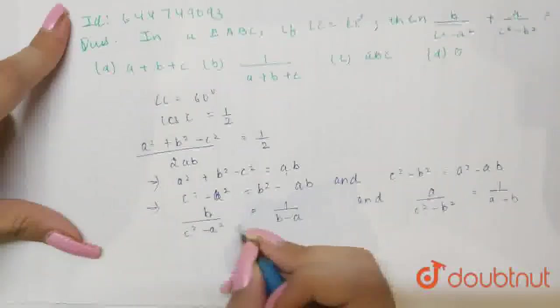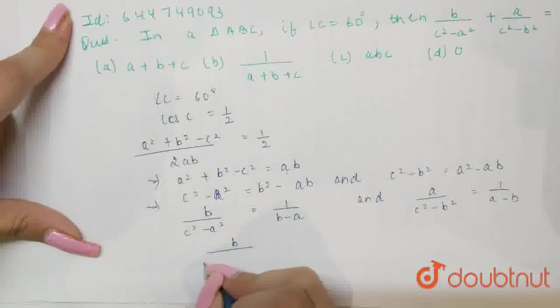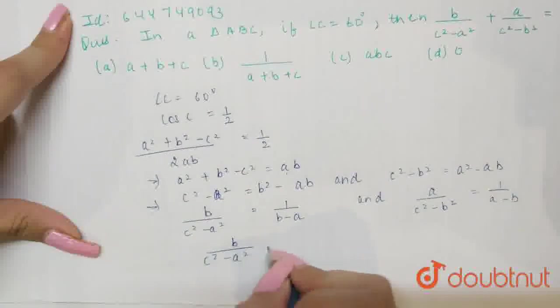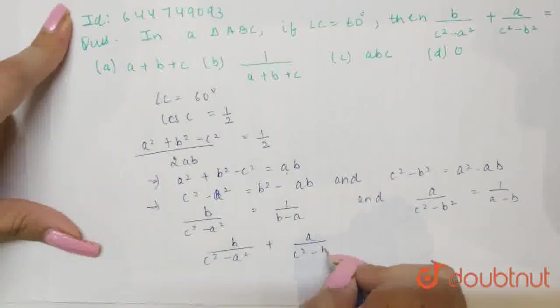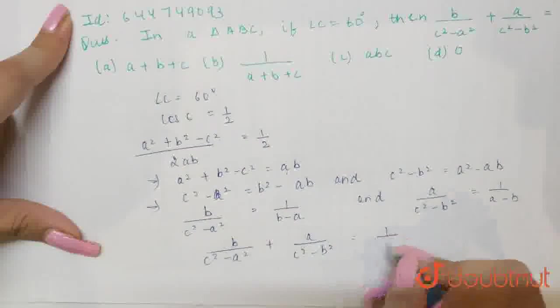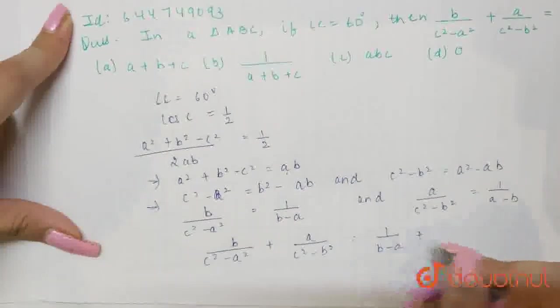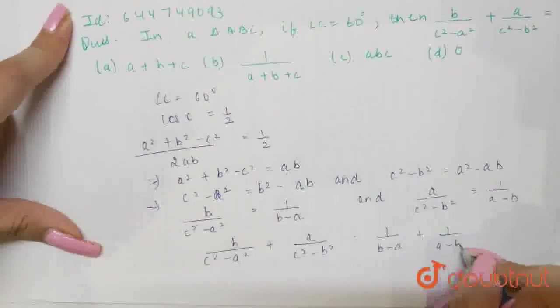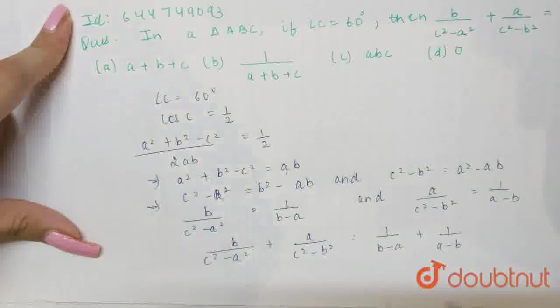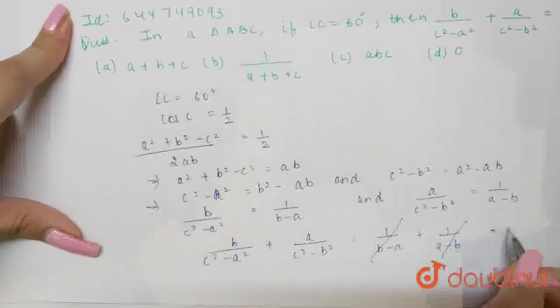Now, if I add both these, this will be b upon c square minus a square plus a upon c square minus b square, this will become 1 upon b minus a plus 1 upon a minus b. Now, these are having opposite signs, so they will cancel out and the answer will be 0.